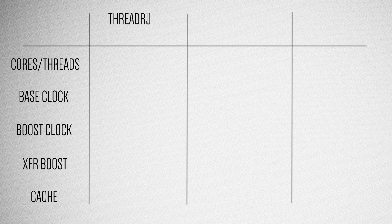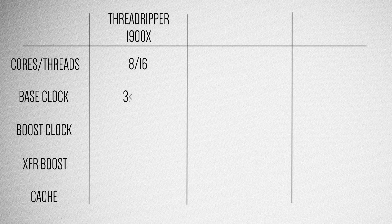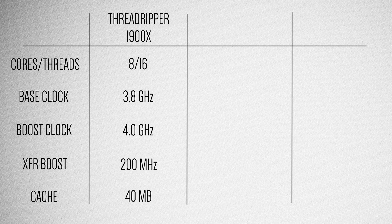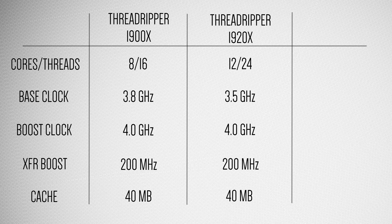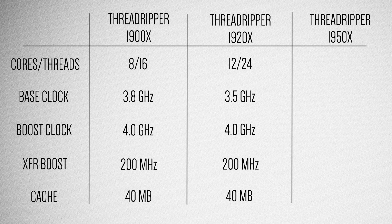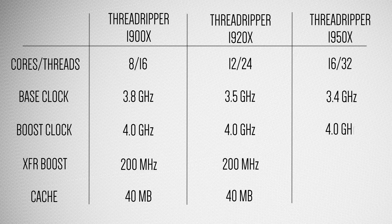First is the 1900X, which comes with 8 cores and 16 threads, with a base clock of 3.8 GHz and a boost clock of 4 GHz. Second is the 1920X, which comes with 12 cores and 24 threads, with a base clock of 3.5 GHz and a boost clock of 4 GHz. And lastly, the flagship — the 1950X — has a base clock of 3.4 GHz and a boost clock of 4 GHz, and with the XFR boost of 200 MHz, it can hit up to 4.2 GHz.